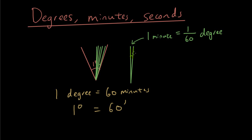Now if I zoom in on 1 minute, let's just say for the sake of argument this is 1 minute, not 1 degree. 1 minute. And then I divide this up into even smaller angles. 60 of them.